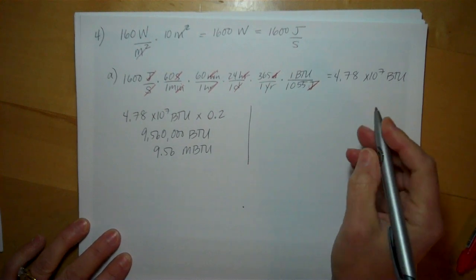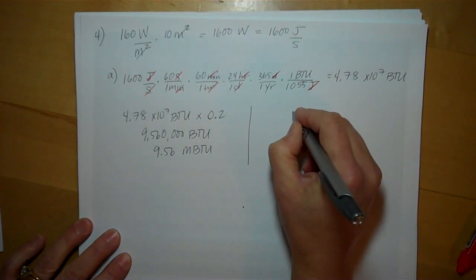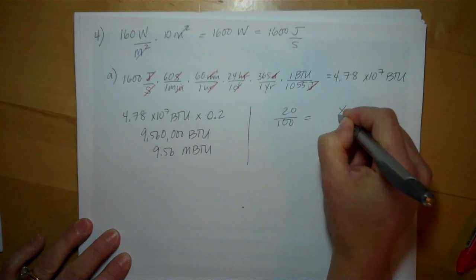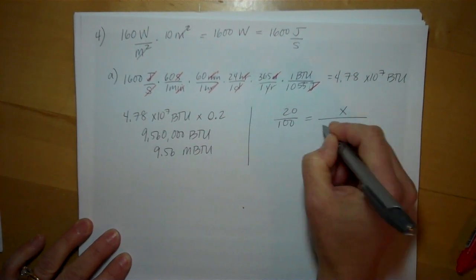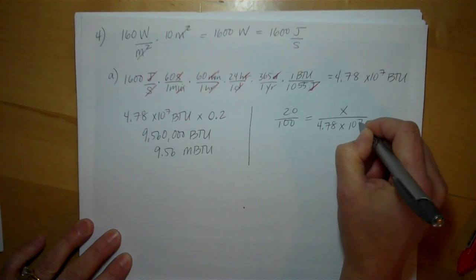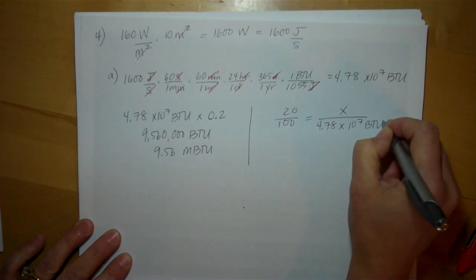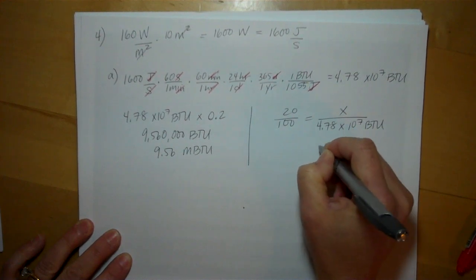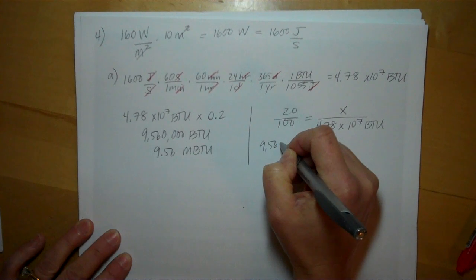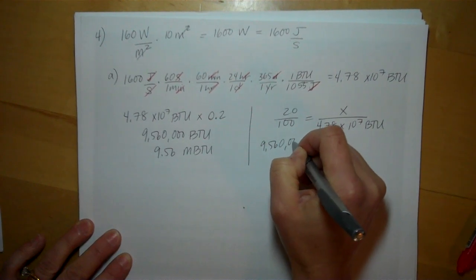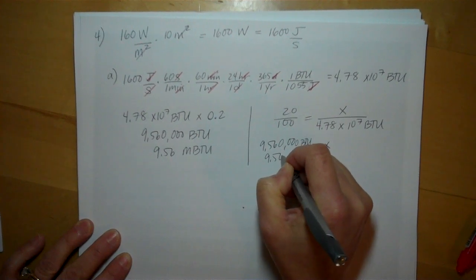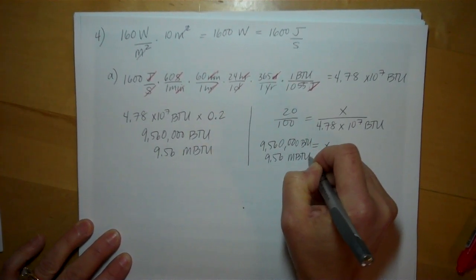Or some people prefer to set it up in a proportion—that's fine. If you want 20%, what is 20% of 4.78 times 10 to the 7th BTUs? Doing this math out, X comes to 9 million 560 thousand BTUs, or same thing, 9.56 mega BTUs. So that's how much energy our solar system can produce.